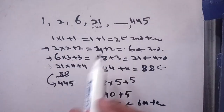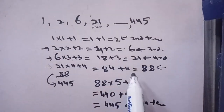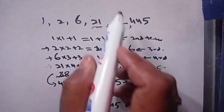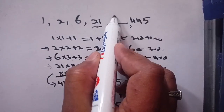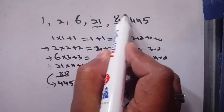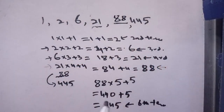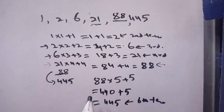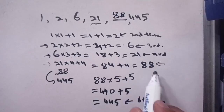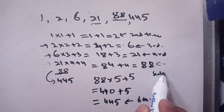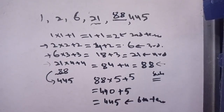Thus the missing fifth term is equal to 88. If you found this helpful, make sure to subscribe to our channel for more informative videos. See you in the next video — bye!